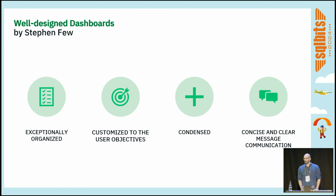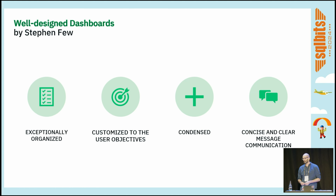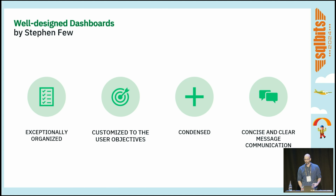According to Stefan Few, there are four elements. It has to be very well organized. It has to meet the expectations of the stakeholder and the end user. It has to provide enough information — it just has to provide efficient information. And it has to come through in a concise and clear way without leaving any room for questions, misunderstandings, or red flags.